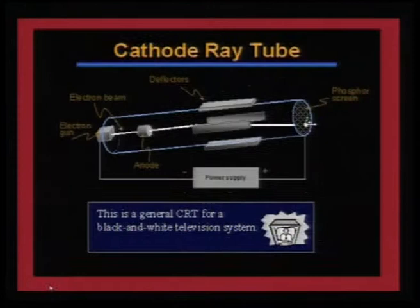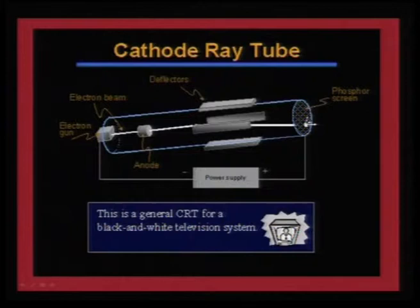In a cathode ray tube, the electron gun produces a cathode ray channelised through an anode. The direction is along the tube axis, and using a magnetic field you can deflect and scan the electron beam wherever you want.